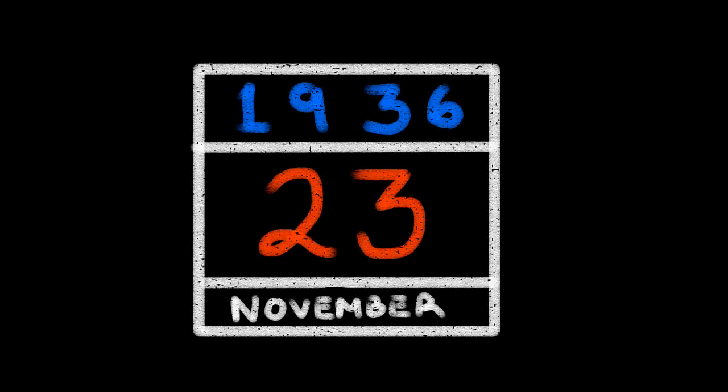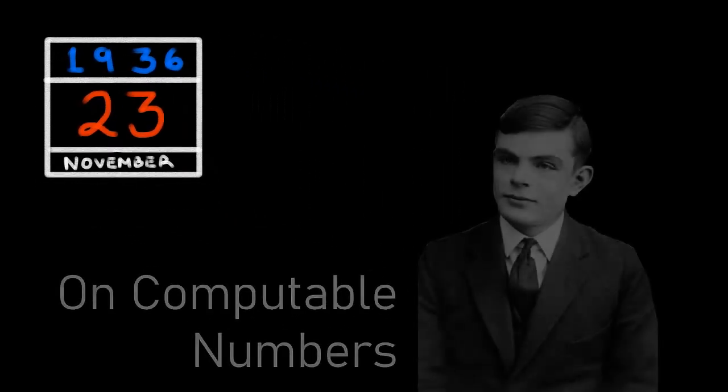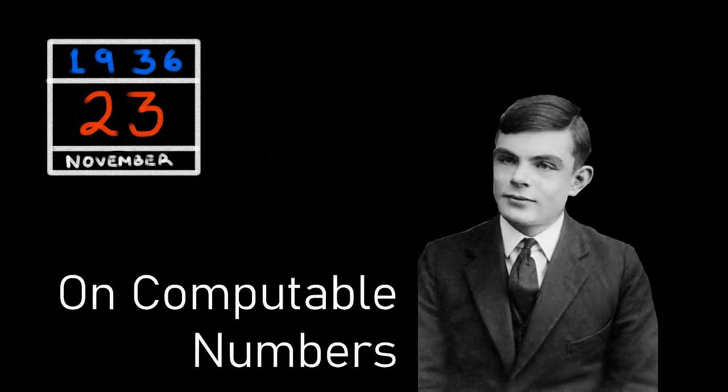It's the 23rd of November 1936, and the most famous theoretical paper in the history of computing, Uncomputable Numbers by Alan Turing, has been published.